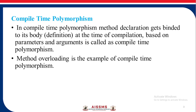Compile-time polymorphism: In compile-time polymorphism, method declaration gets binded to its body at the time of compilation based on the parameters and arguments. Method overloading is an example of compile-time polymorphism.